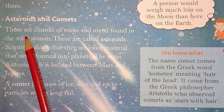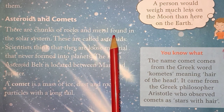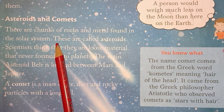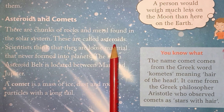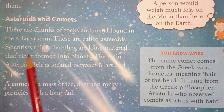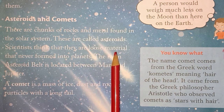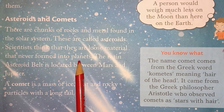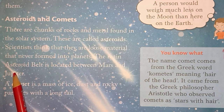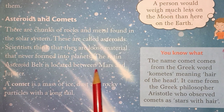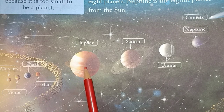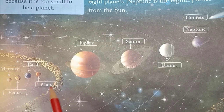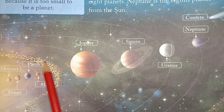There are chunks of rocks and metal found in the solar system — these are called asteroids. We can see large rocks and metals revolving around the Sun, and scientists think they are loose material that never formed into planets. The main asteroid belt is located between Mars and Jupiter, as you can see in this picture — this belt is revolving around the Sun.